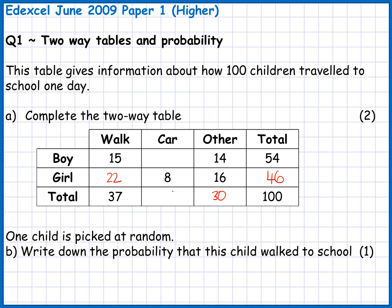Now for the car total. The full total of walk, car and other has to be 100, so whatever goes here must be added to 37 and 30 to make 100. So far 37 and 30 makes 67, meaning I need 33 people who travel by car in total. Then I can fill in boys who went by car by taking 8 away from 33 to give 25. Final check: the total number of boys should be 54 — 15 and 25 makes 40, plus 14 gives 54. So that's two marks.